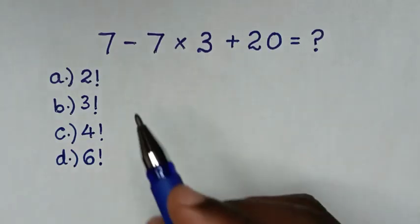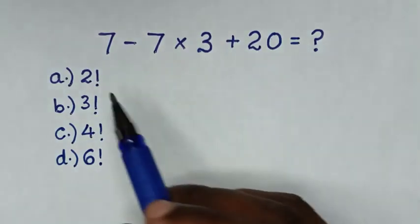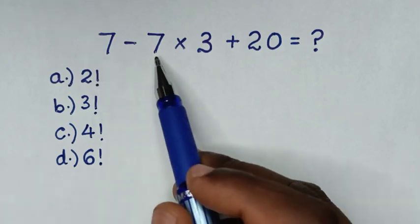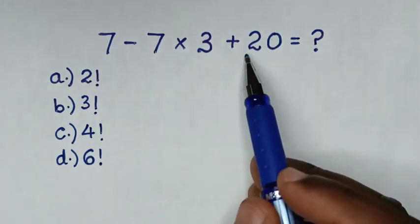Hello, you're welcome to solve this math problem which is 7 minus 7 times 3 plus 20.